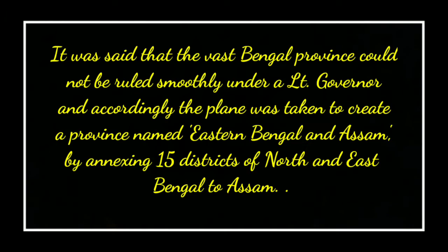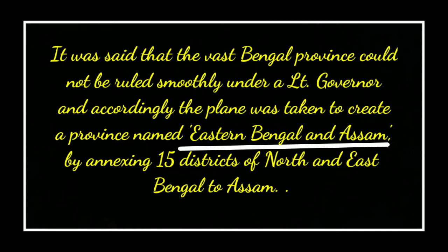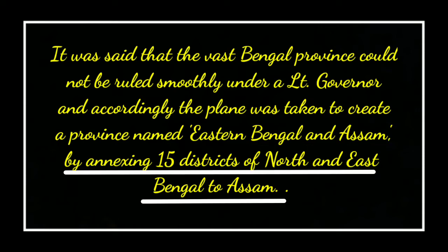It was said that the vast Bengal province could not be ruled smoothly under a Lieutenant Governor. Accordingly, the plan was taken to create a province named Eastern Bengal and Assam by annexing 15 districts of North and East Bengal to Assam. They created another province named Eastern Bengal and Assam by annexing these 15 districts.